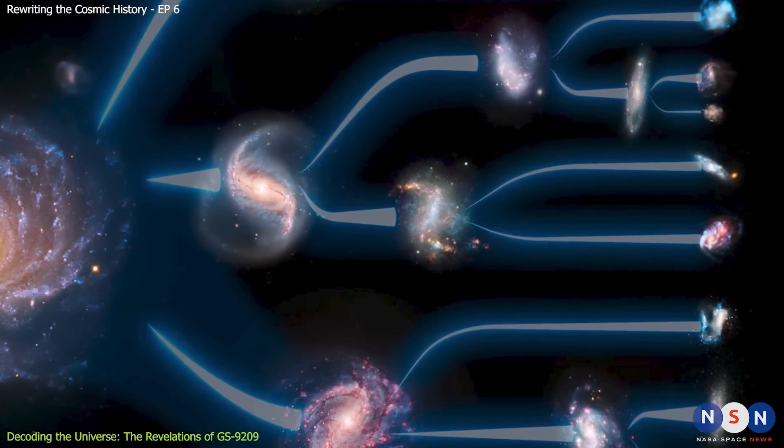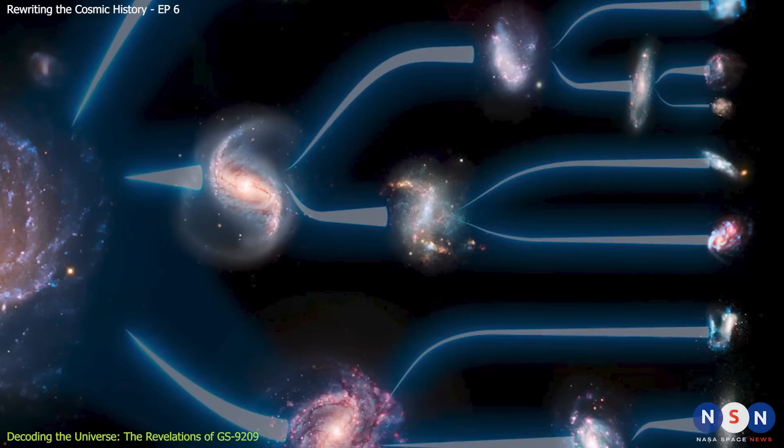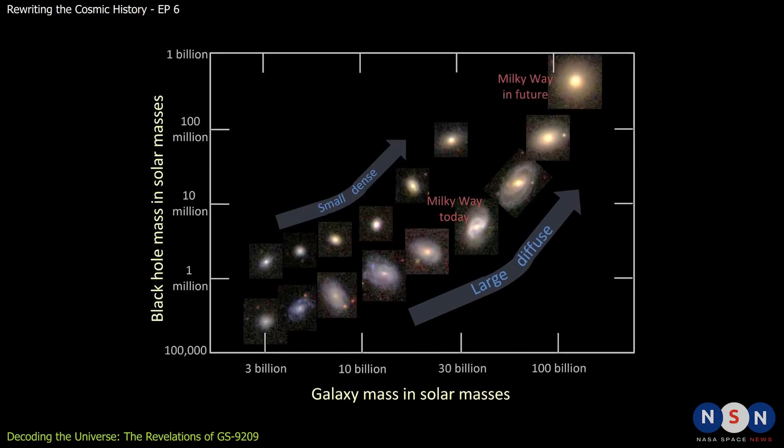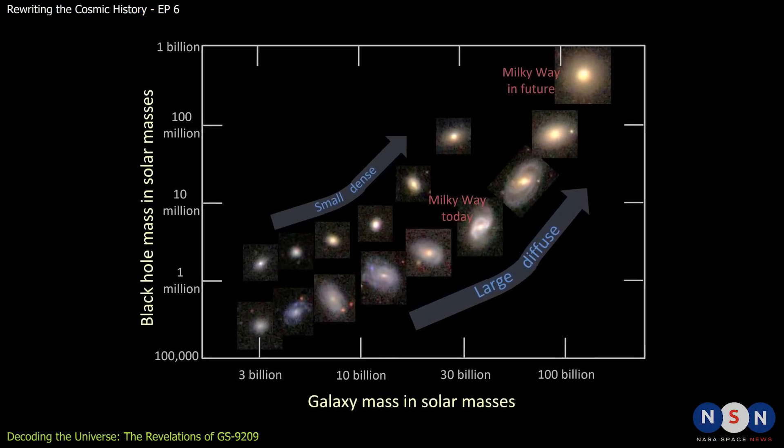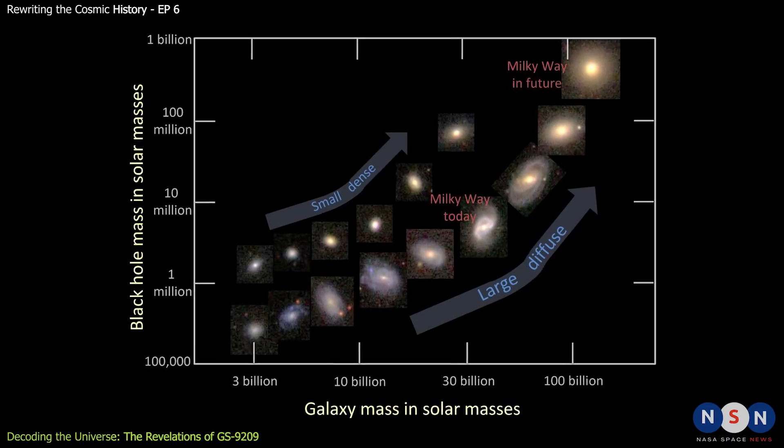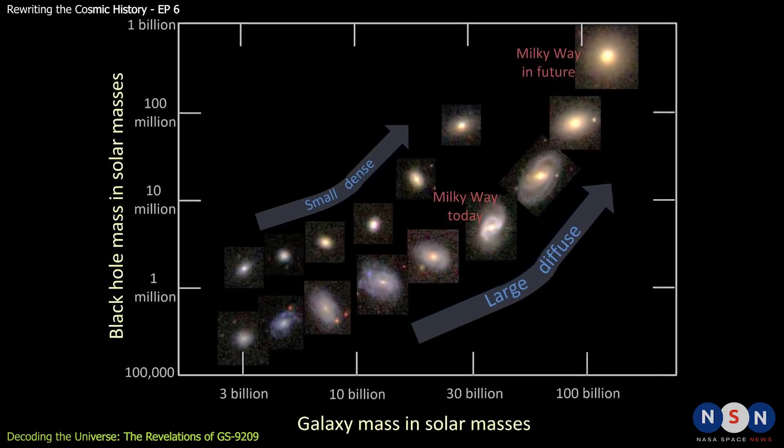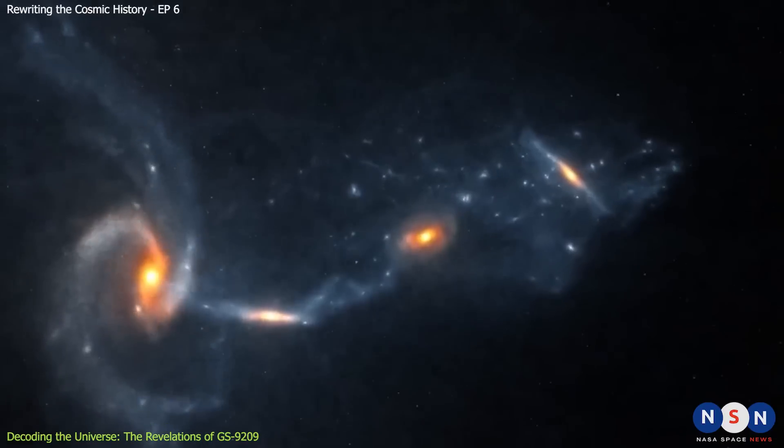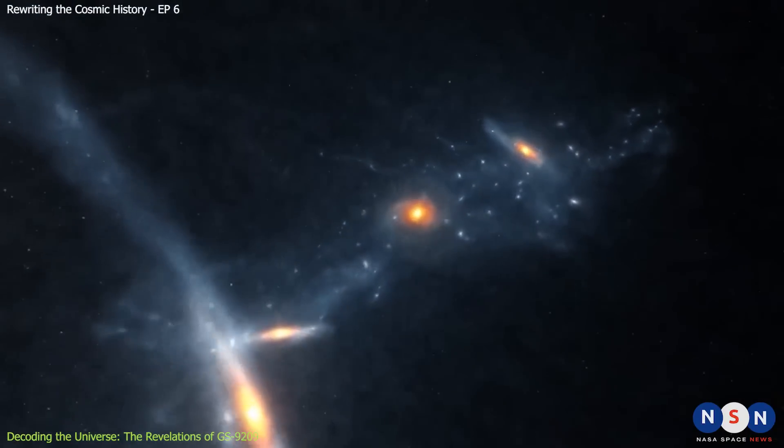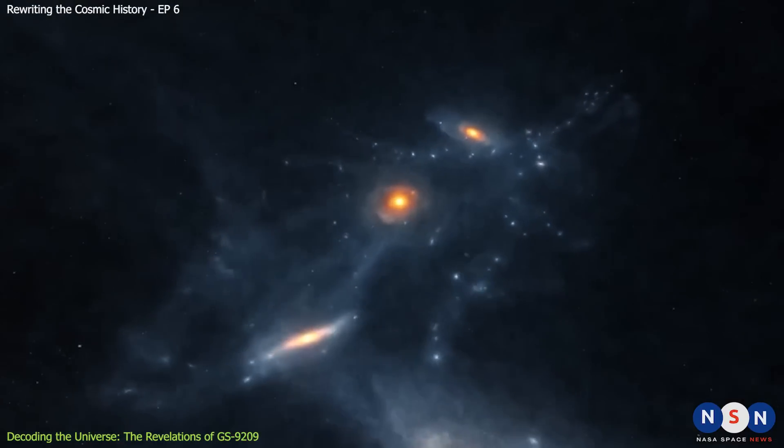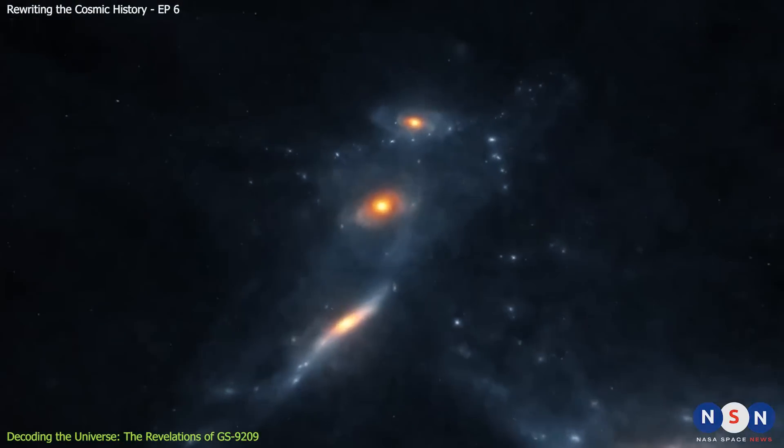It also challenges our current theories and models of galaxy formation, which do not predict such massive and quiescent galaxies to exist so early in cosmic history. GS 9209 may represent a new class of galaxies that formed through different processes than other galaxies.